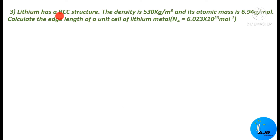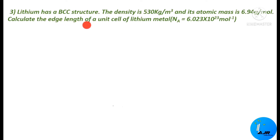The next question: lithium has a BCC structure. The density is 530 kilogram per meter cube — this must be converted to gram per centimeter cube — and its atomic mass is 6.94 gram per mole. We are asked to calculate the edge length of the unit cell of lithium metal.